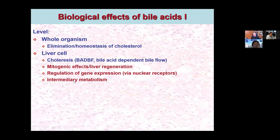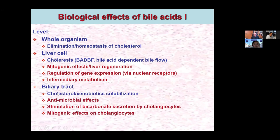Bile acids are also very important for intermediary metabolism of major energy sources such as saccharides and fats. At the level of the biliary tract, they are responsible for solubilization of non-polar substances such as cholesterol and various xenobiotics. They also have antimicrobial effects, stimulate bicarbonate secretion by cholangiocytes — a mechanism now being tested for treatment of primary sclerosing cholangitis — and they have mitogenic effects on cholangiocytes.